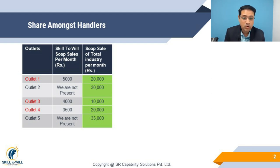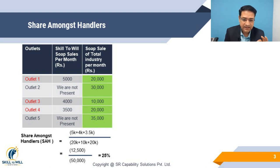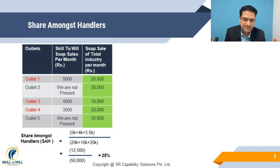Outlet number 2 and outlet number 5 are not present — meaning we are not stocked there. Where we are present — outlet number 1, outlet number 3, and outlet number 4 — we add our sales: 5,000 + 4,000 + 3,500. We then divide this by the total industry sales in those same outlets where we are present, which is 20,000. This gives us Share Amongst Handlers.